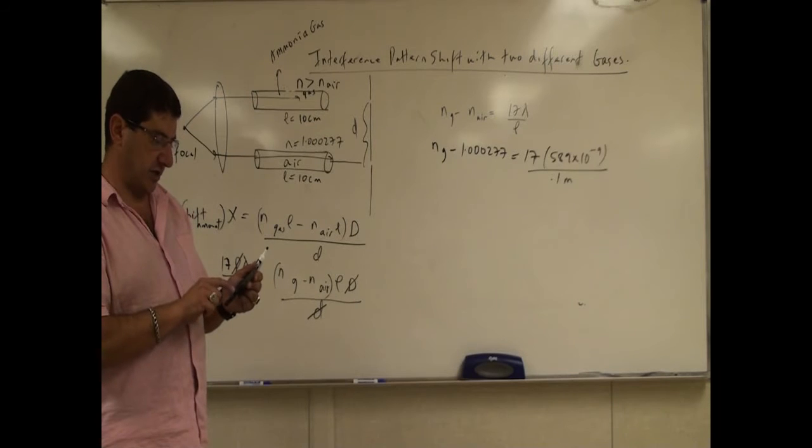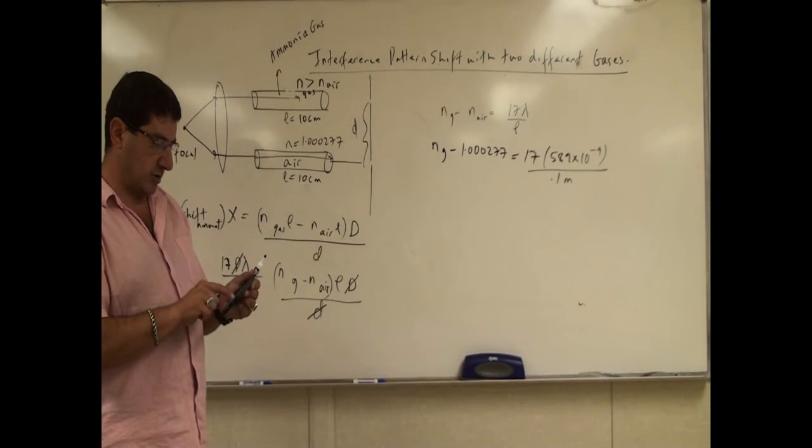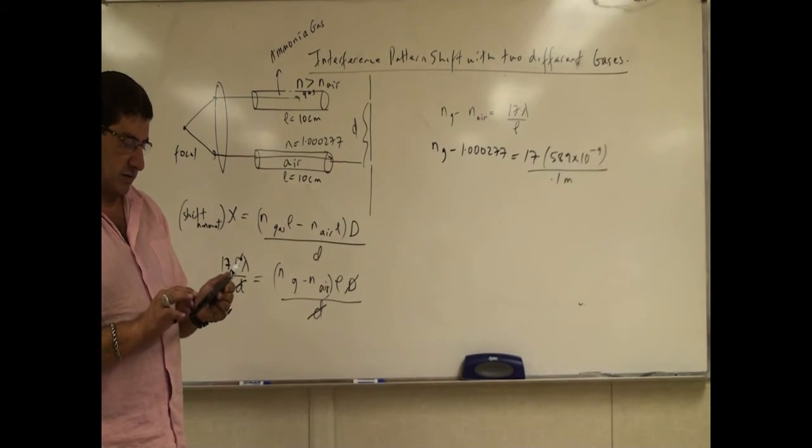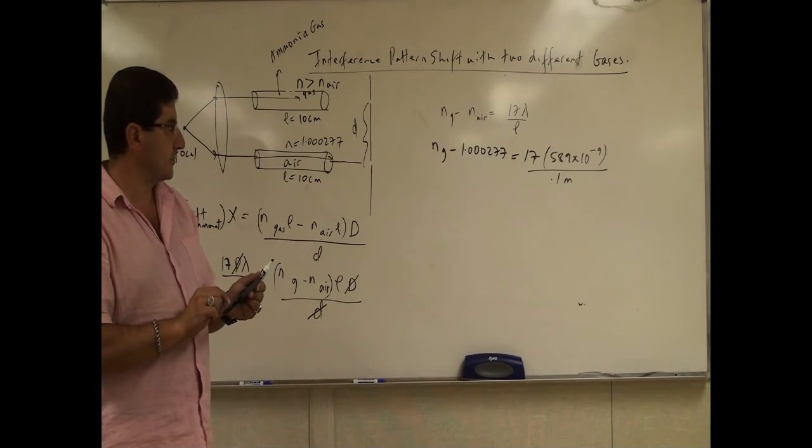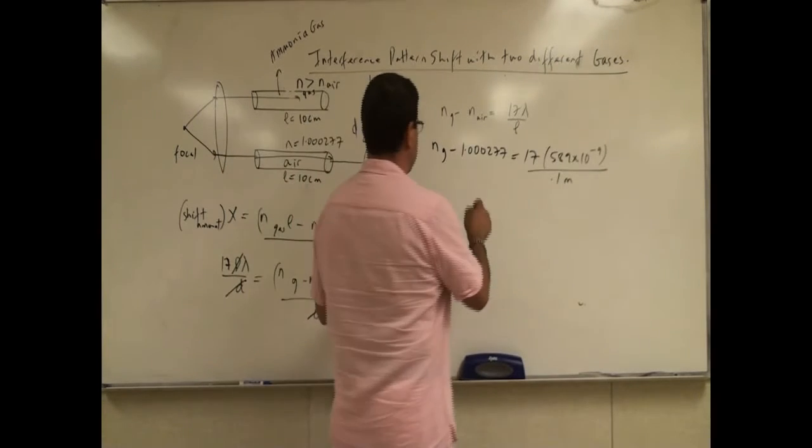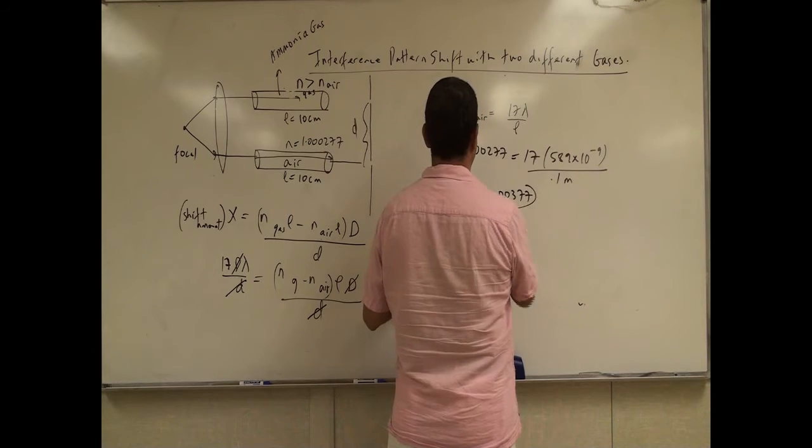We have here 17 times 589 times 10 to the power of negative 9. Divide that by 0.1. Add that to 1.000277. So you get 1.000377.